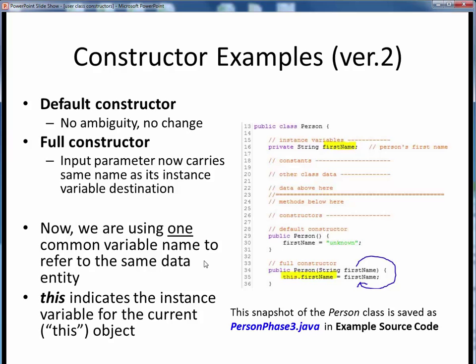Now we're referring to the same data using one common name. And this, no pun intended, just feels cleaner. This is how I'd like to see you implement all your instance variables if they also involve some input parameter of the same name.